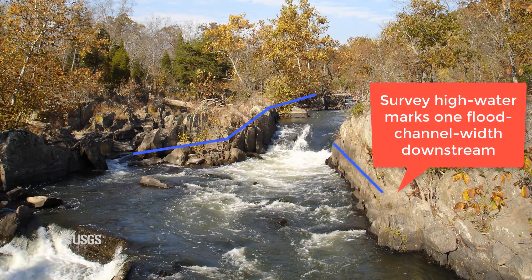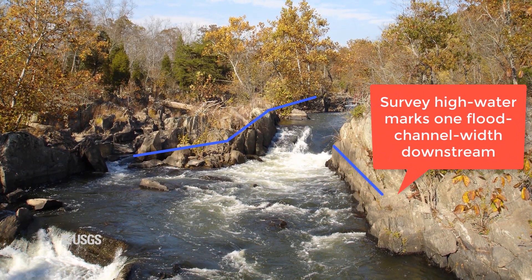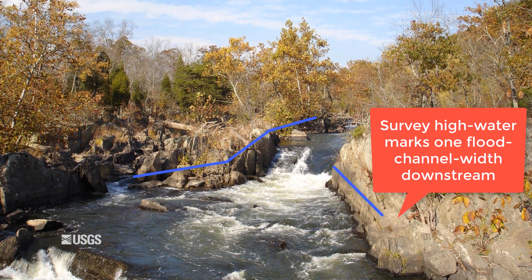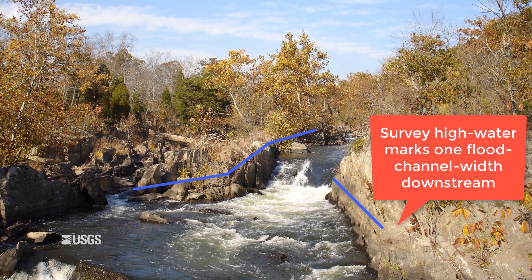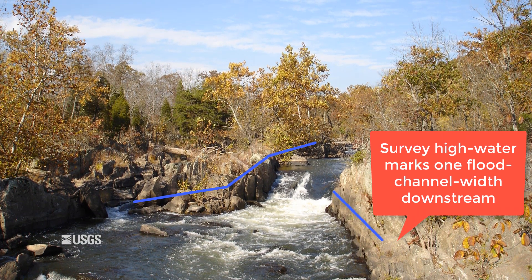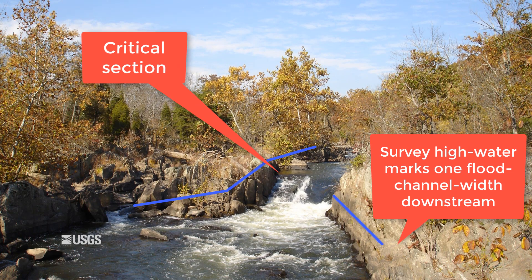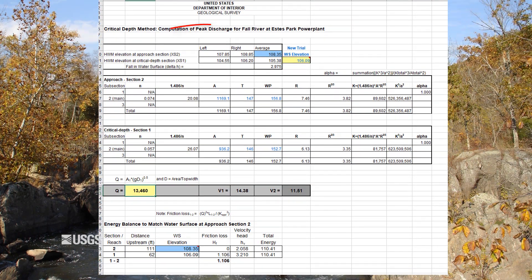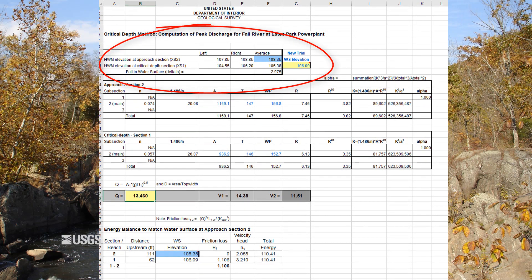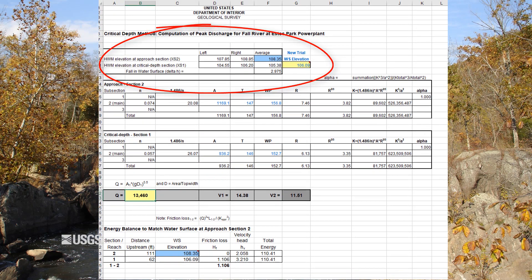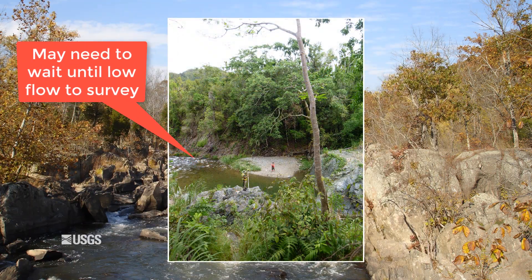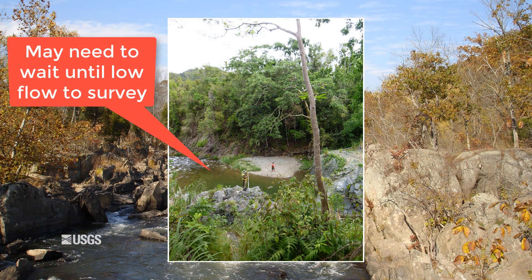Survey the high watermarks from the approach past the drop to a distance of one flood channel width downstream of the critical section. You are surveying the downstream side to document the tailwater conditions below the critical section. It is possible there are few to no high watermarks at the critical section itself, but do your best. During the computation, you will actually be solving for the water surface elevation at the critical section, so it is helpful to have an idea of the elevation by having some high watermarks available. Also, be aware of the safety of surveying near the drop — you may have to wait until low flow before such an area can be safely accessed.